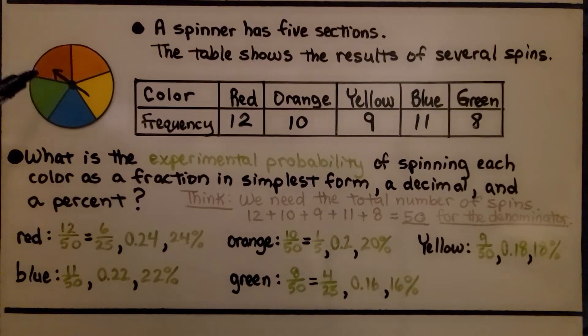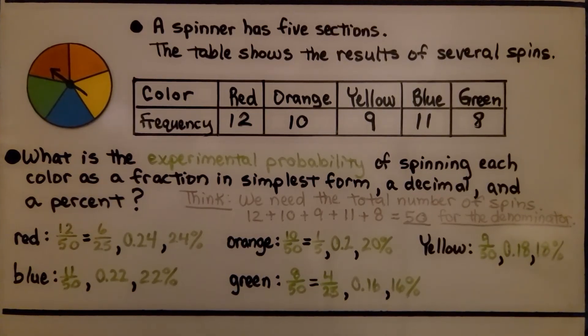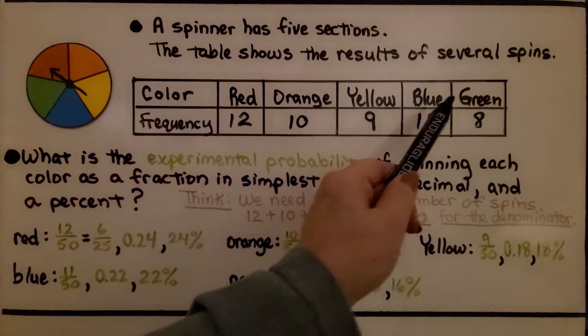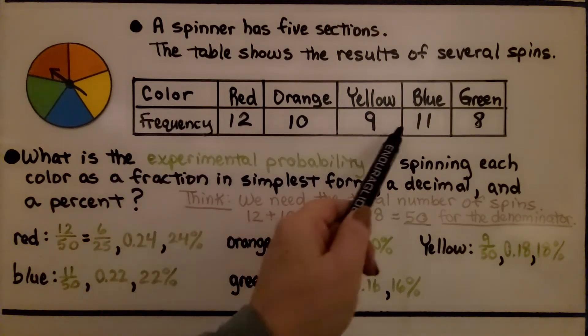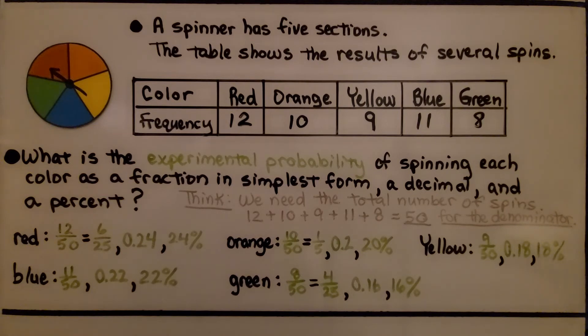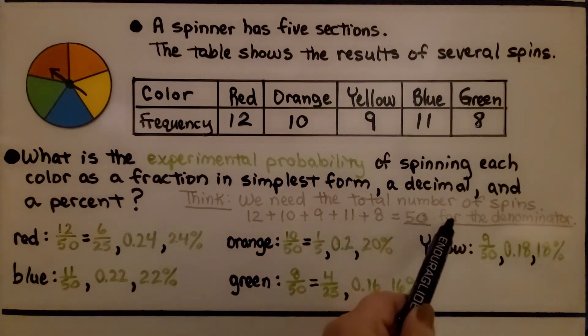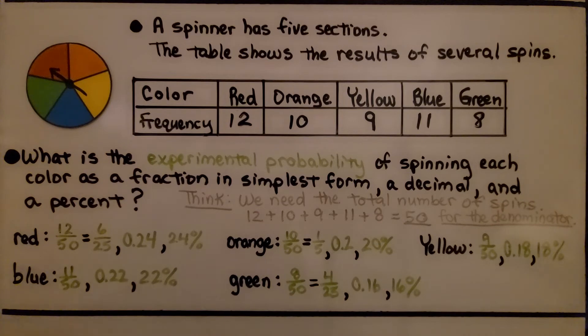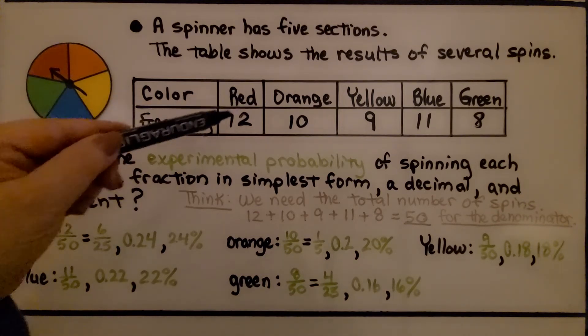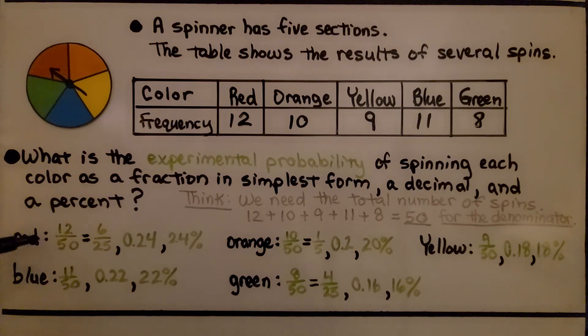This spinner has five sections and the table shows the results of several spins. We have the colors listed and the frequency that it landed on that color. What is the experimental probability of spinning each color as a fraction in simplest form, a decimal and a percent? We need the total number of spins: 12 plus 10 plus 9 plus 11 plus 8, which is equal to 50, for the denominator of our fraction. For red, we've got 12 out of 50 spins, 12 50ths, which in simplest form is 6 25ths.